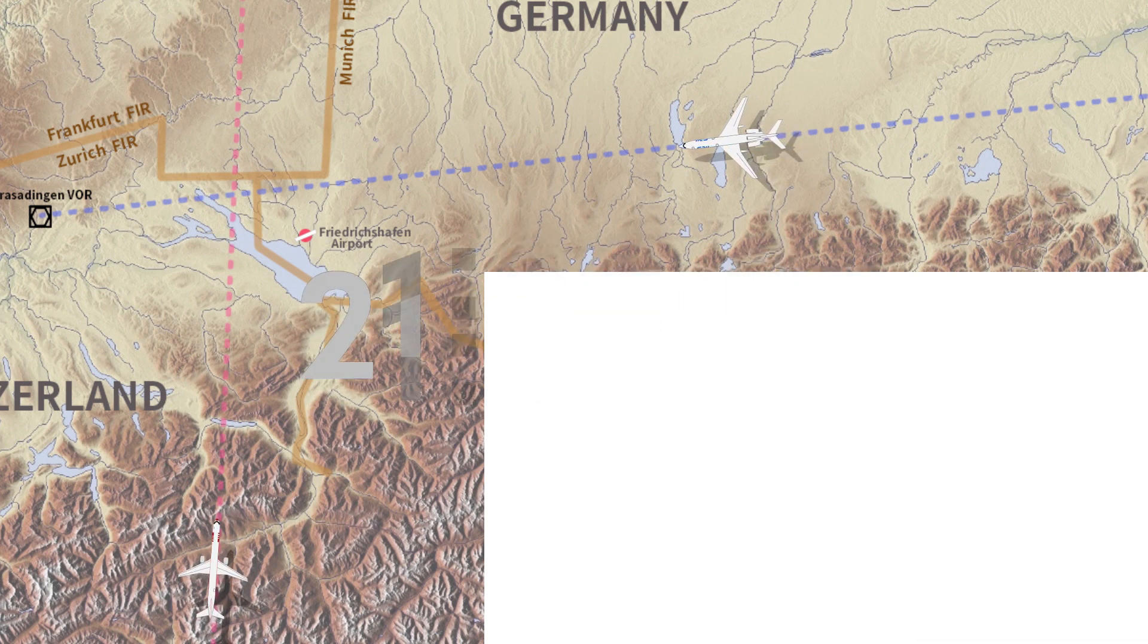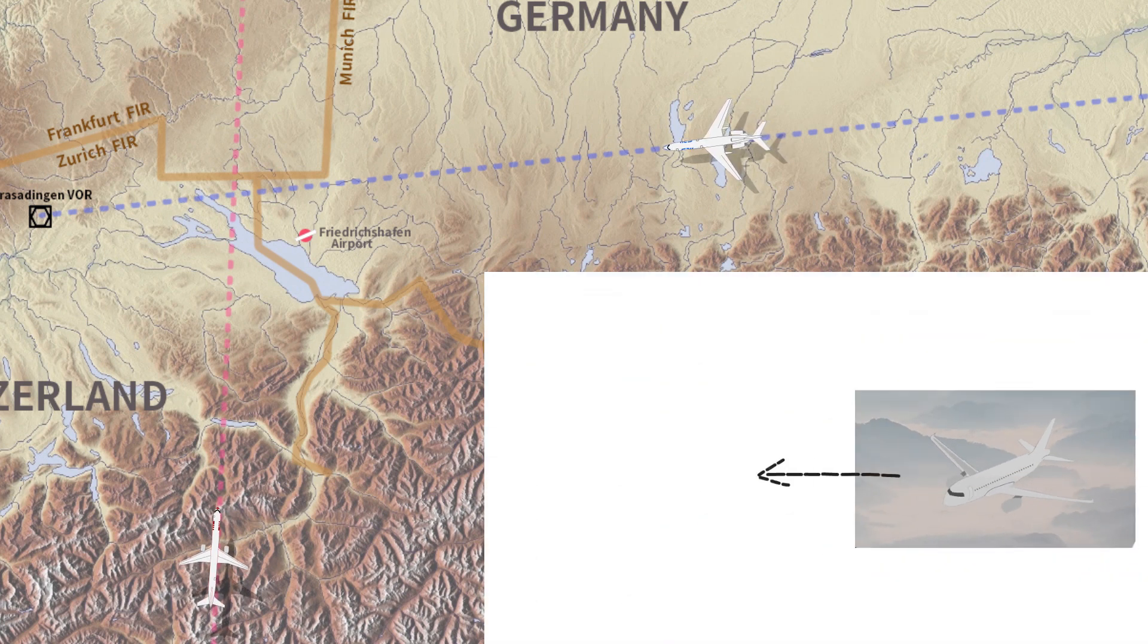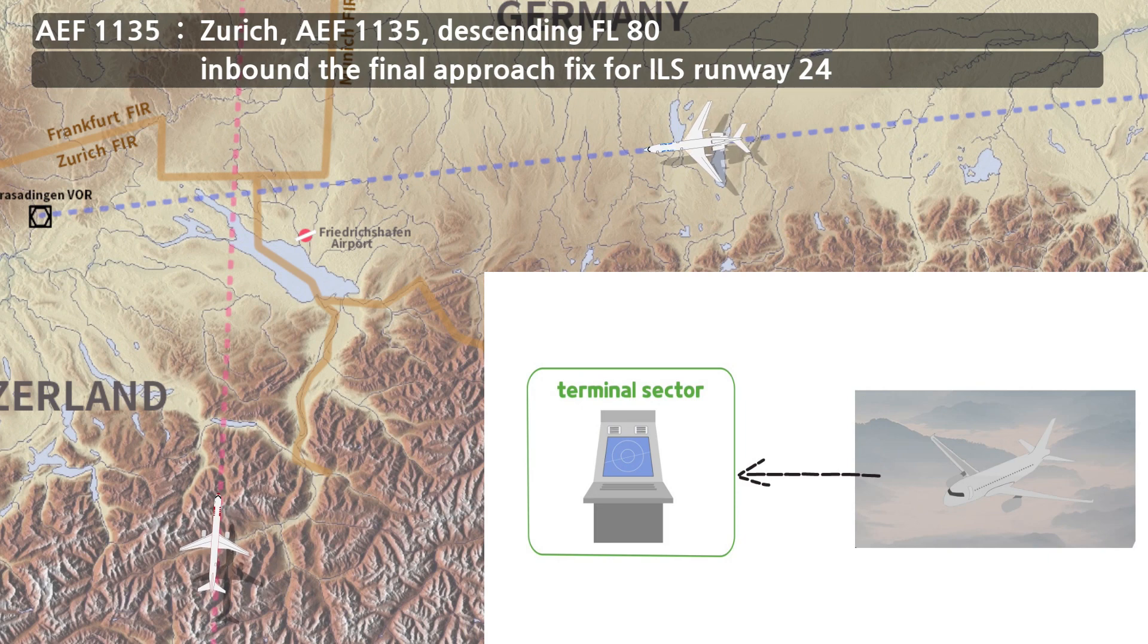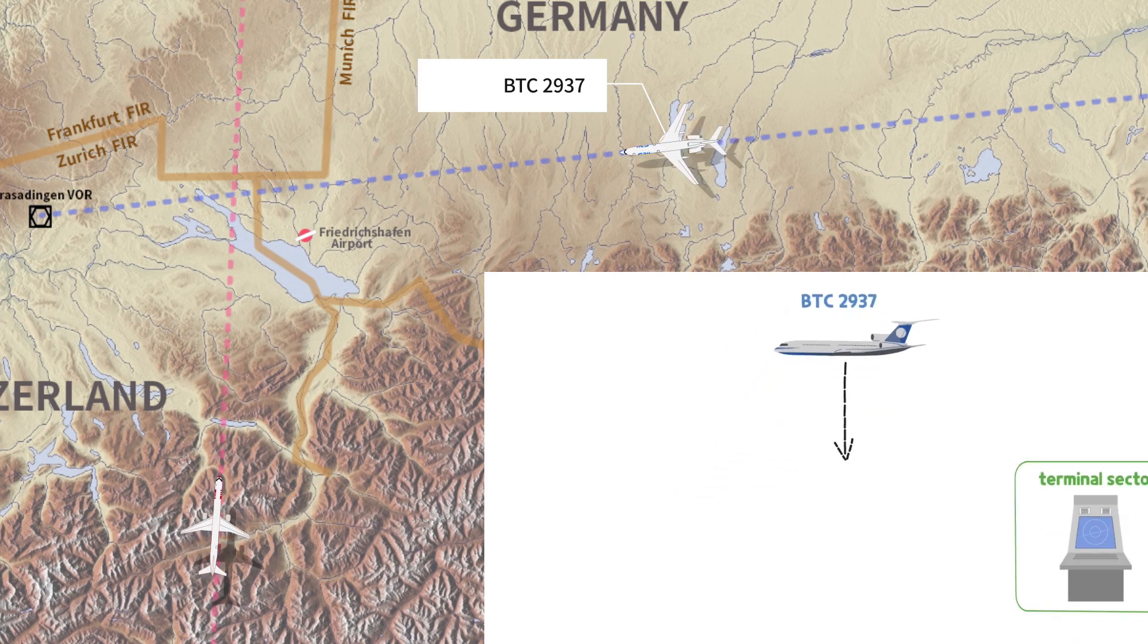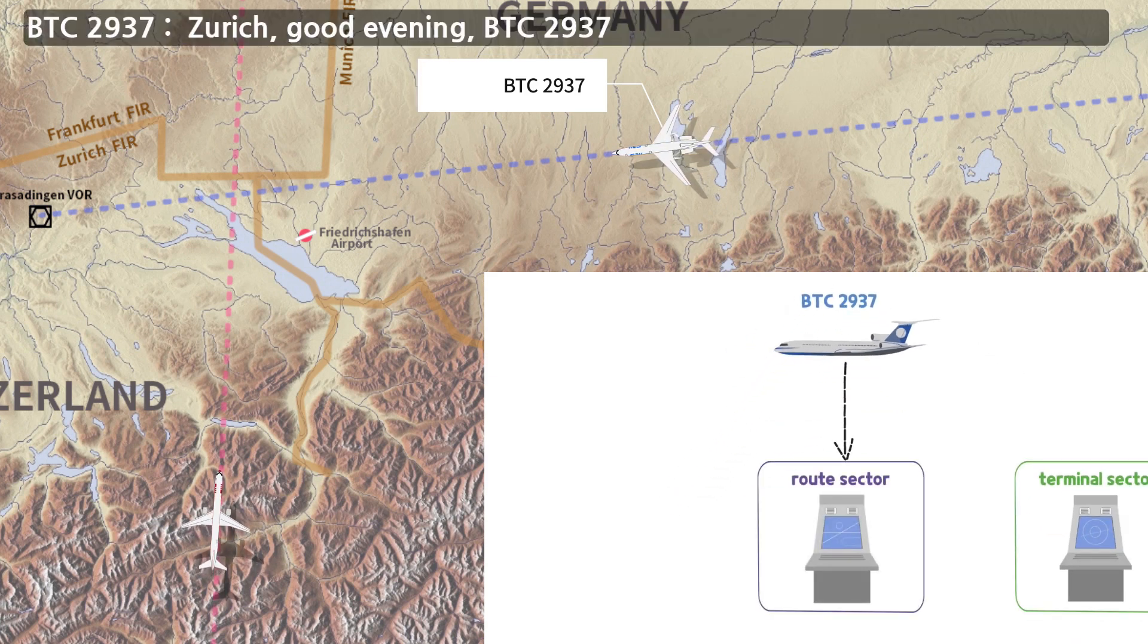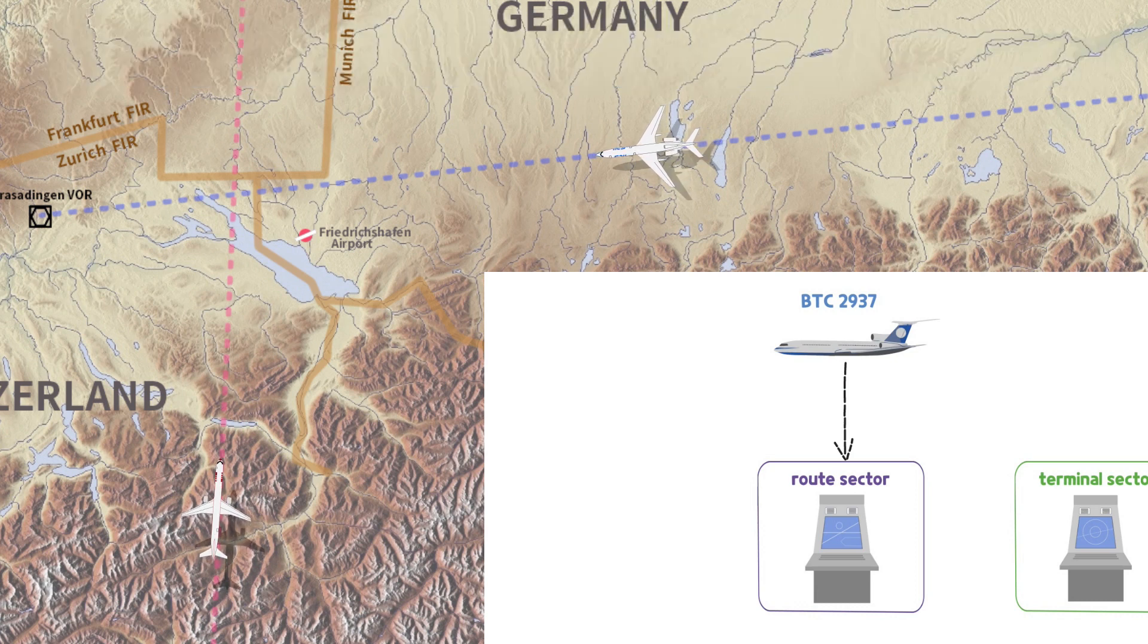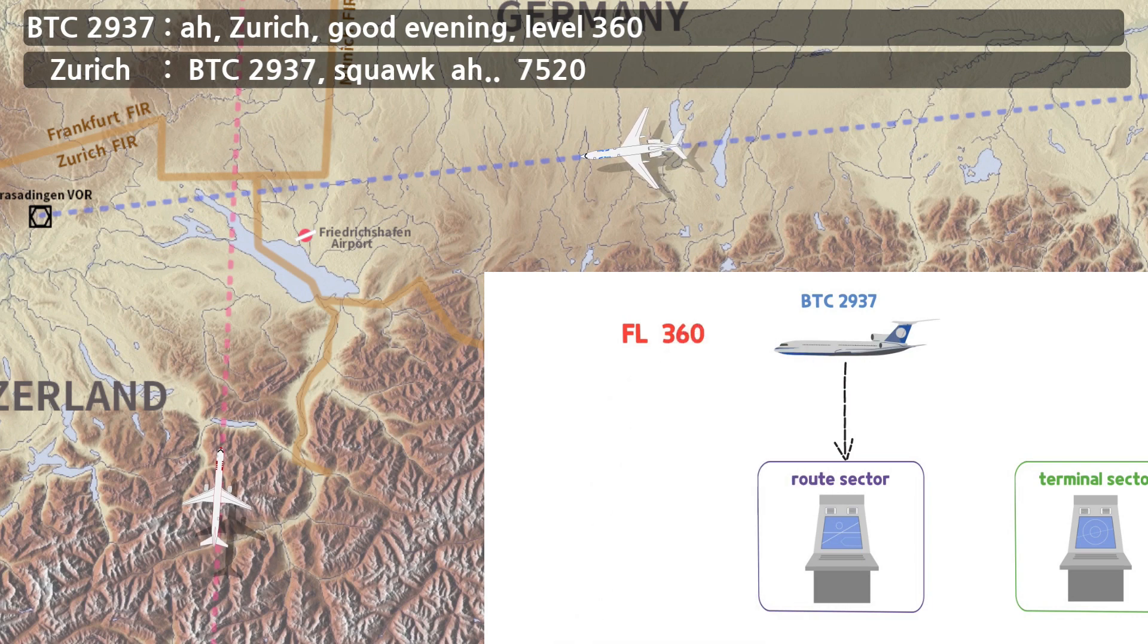AEF-1135, which was not scheduled, suddenly called the controller on the terminal frequency, 119.92, requested to land at Friedrichshafen International Airport. BTC-2937 contacted Zurich ACC on frequency 128.05. At this time, the altitude of BTC-2937 was at flight level 360.